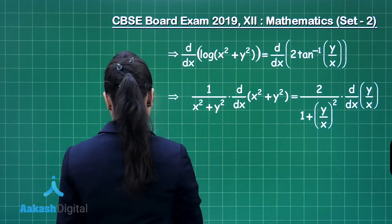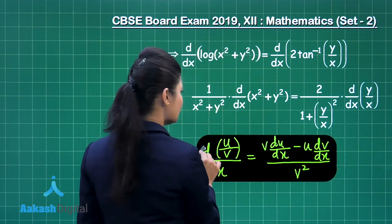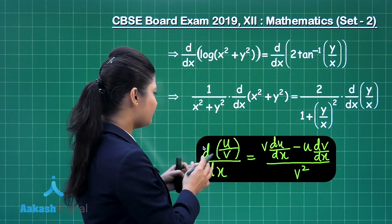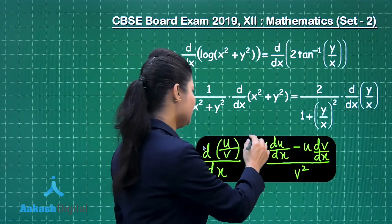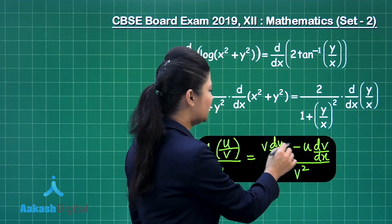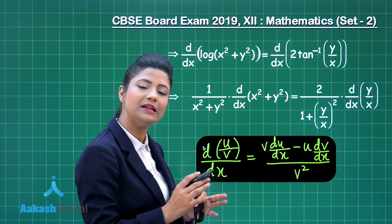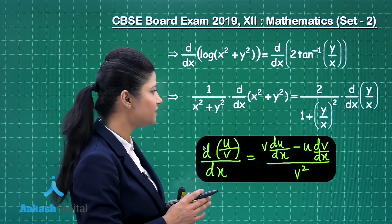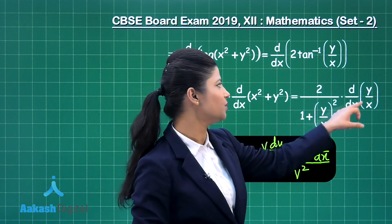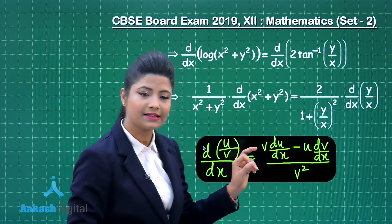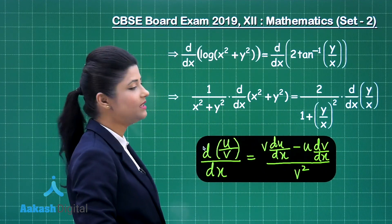You need to recall this very important formula. When you differentiate u by v with respect to x, this is given by v times du/dx minus u times dv/dx, all upon v squared. We will be applying this same quotient rule formula to differentiate y by x. Write this formula in your examination.